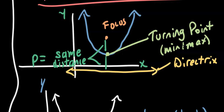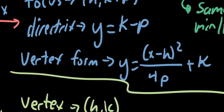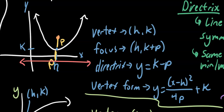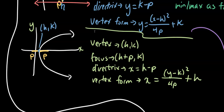This occurs at the same x-value as the turning point (min or max). We can write a quadratic in vertex form, doing algebraic manipulation from standard form. The vertex is written as (h, k), where h is the x-value and k is the y-value of the turning point. For a vertical parabola: the focus is (h, k + p), the directrix is y = k − p, and vertex form is y = (x − h)² / (4p) + k. For a horizontal parabola, we swap the h's and k's, x's and y's, since the parabola opens left or right.